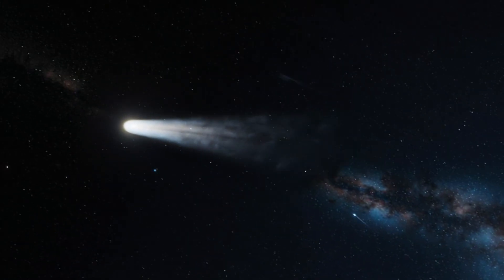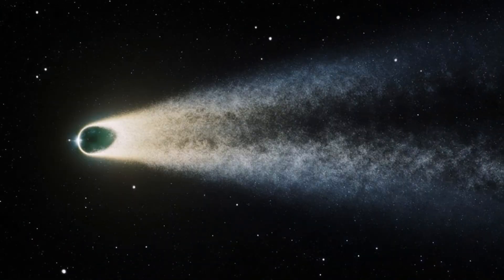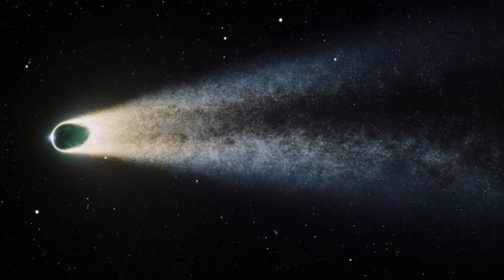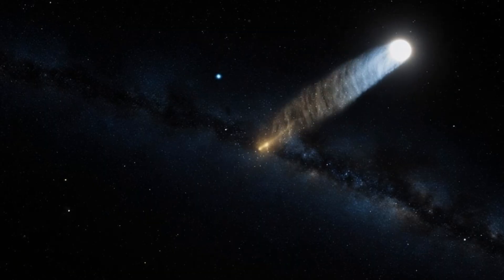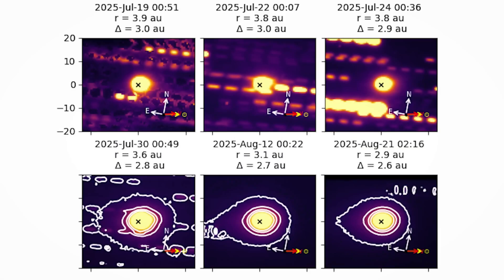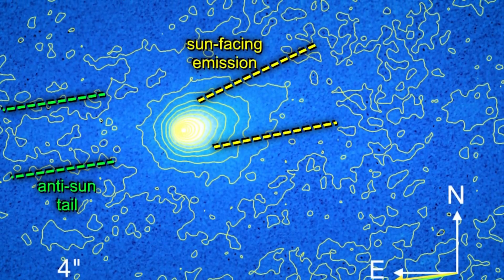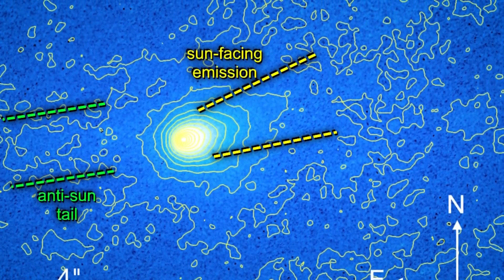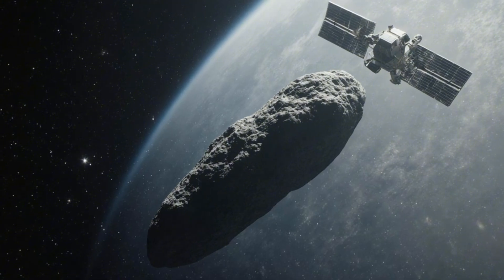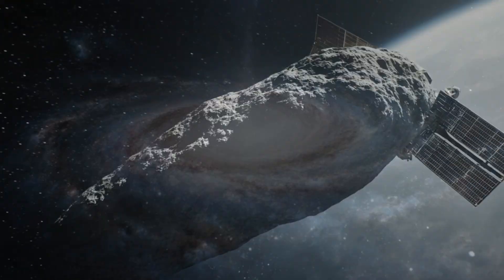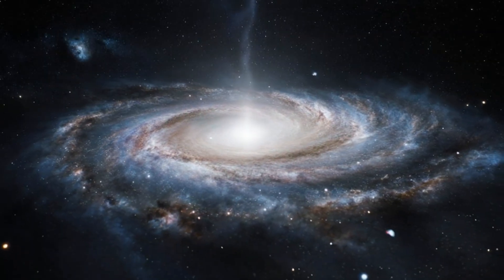Why would a comet's tail change shape from one image to the next? If you've wondered whether that means a break-up, new jets, or just viewing angle, you're in the right place. In this video, we'll unpack the main drivers: dust vs ion tails, solar wind pressure and rotation, and show you what to look for in the latest 3i Atlas frames. No hype, just what the images likely indicate, what's uncertain, and what the next observations could confirm.